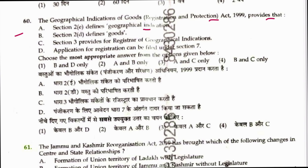Question 60: The Geographical Indication of Goods Registration and Protection Act — Section 2(e) defines geographical indication, which is correct. Section 2(d) defines district — goods are defined in Section 2(f). Section 3 provides for the Registrar of Geographical Indications — correct. Application for registration can be filed under Section 11, not 7 — so that is wrong. Correct statements are A and C only. Answer is 3.